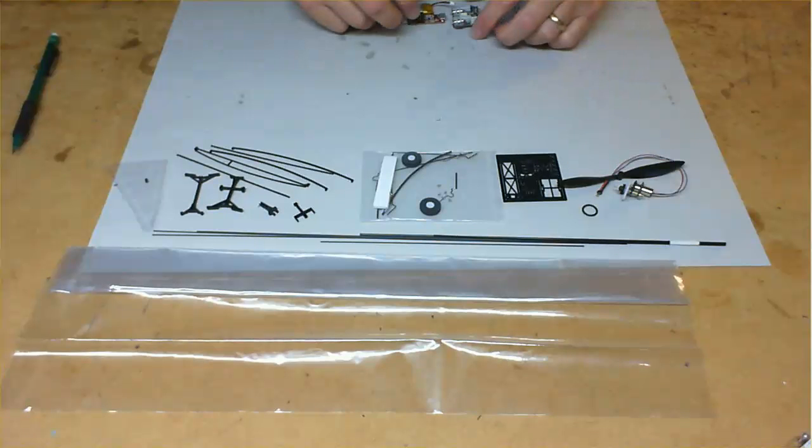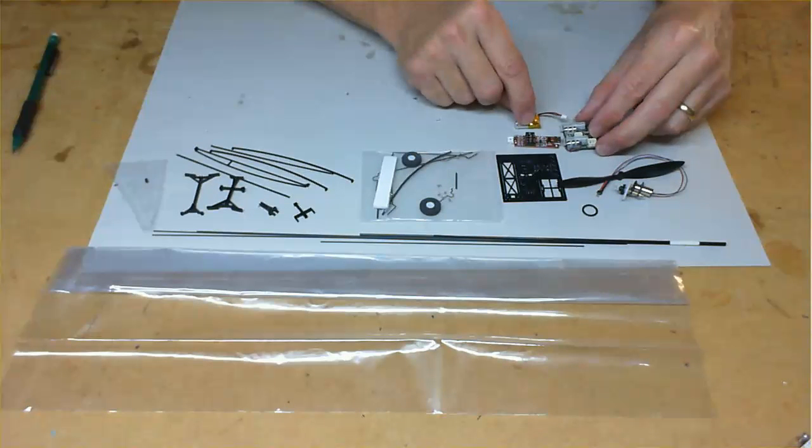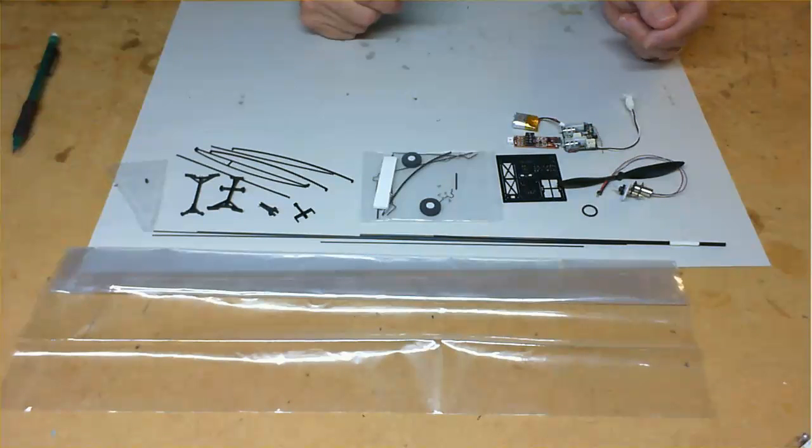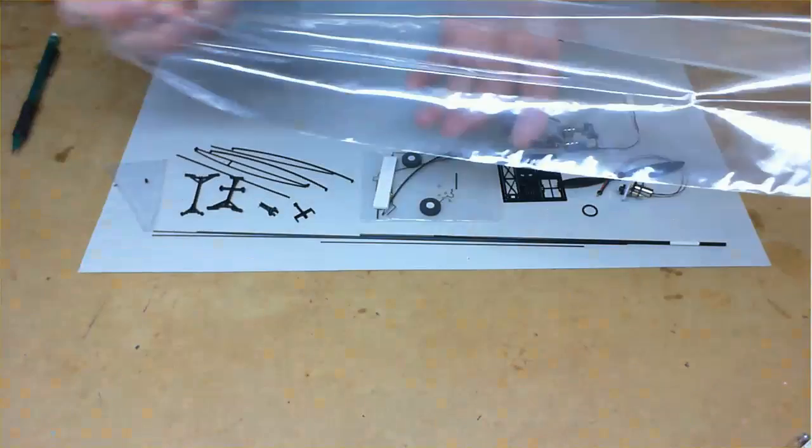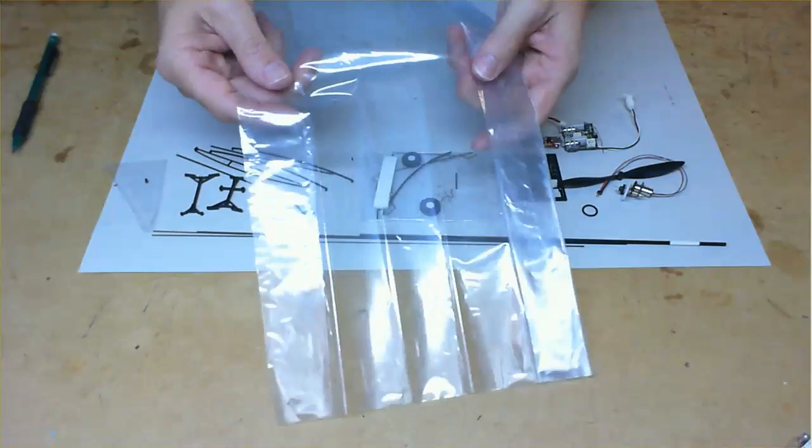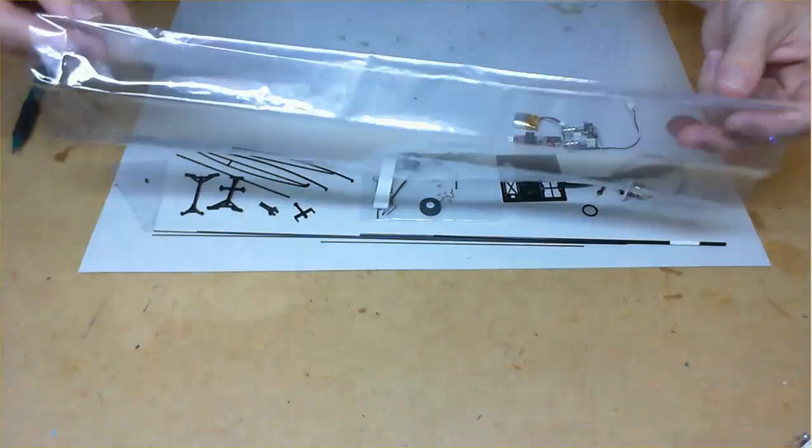So, they're the parts in the airframe only kit. And with the complete kit, you get these three extras here. Okay, so starting off, we've got the covering film. And we've given plenty of film here. There's actually enough to cover the top and the bottom of the wings, if you desire.